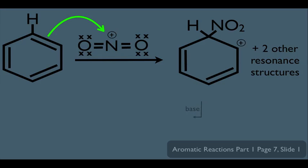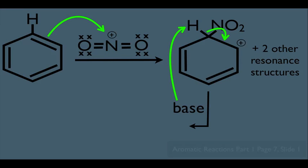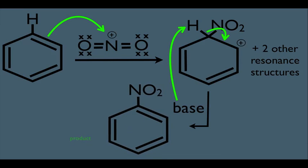And of course remember we know how this ends, a base comes along, rips off this extra hydrogen, the electrons fall down here, and we end up with this as a result, as a product. So notice there it is, our general mechanism for electrophilic aromatic substitution.